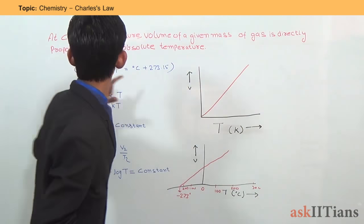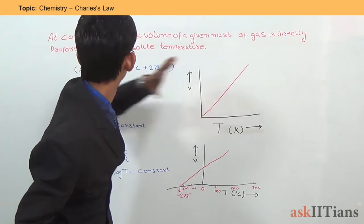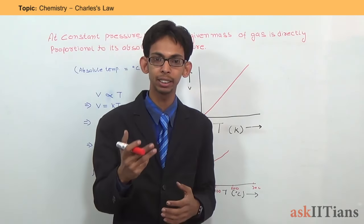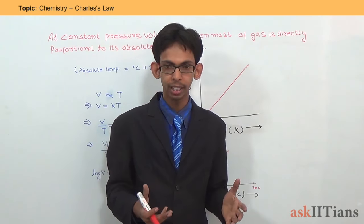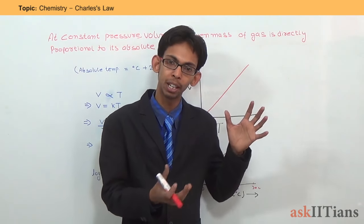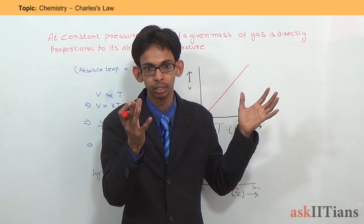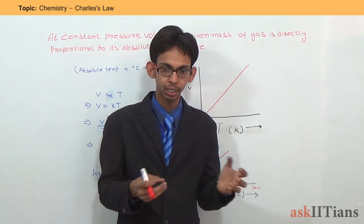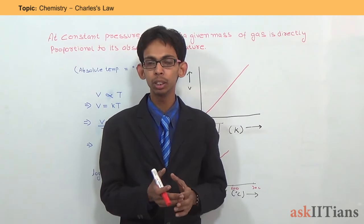Let's have a look at this statement: at constant pressure, the volume of a given mass of a gas is directly proportional to its absolute temperature. That means whenever the absolute temperature increases, it results in increasing volume of the gas. It is basic knowledge that gas always expands with increasing temperature — whenever we heat the gas, it expands, meaning its volume increases. This is Charles's Law.